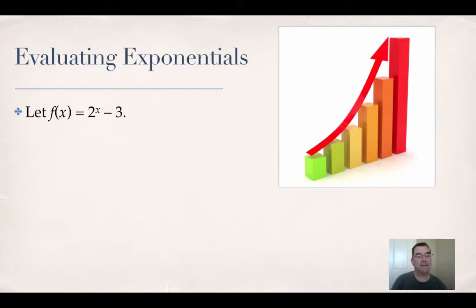So let's say I have f of x equals 2 to the x minus 3. If I wanted to know what f of 4 was, I would simply replace the x with 4 and I would get 2 to the 4 minus 3, which works out to be 16 minus 3, which is 13.